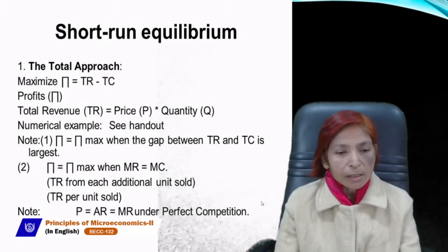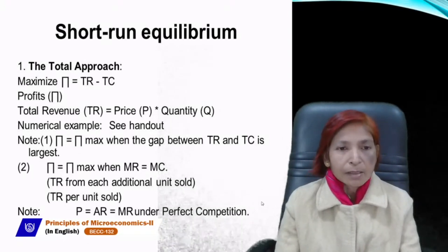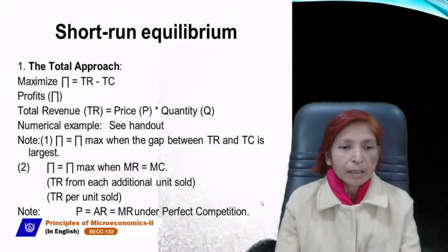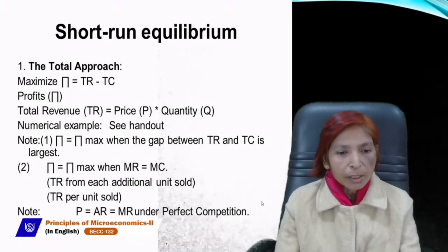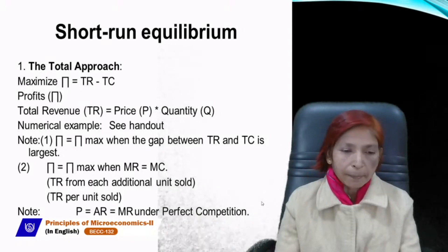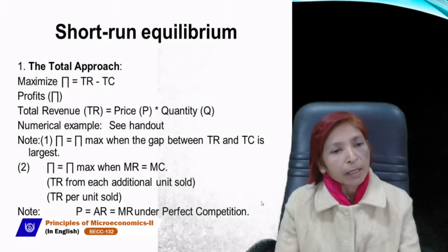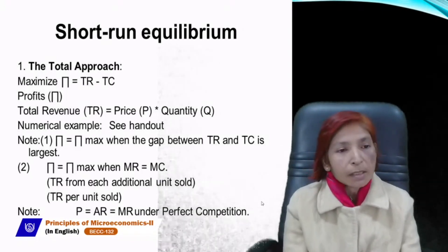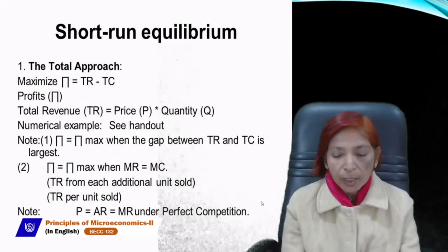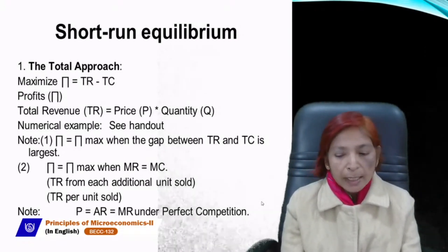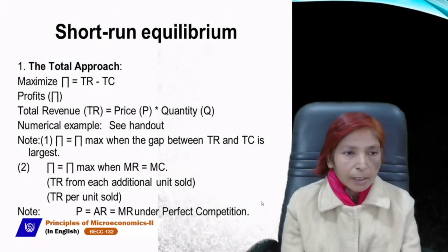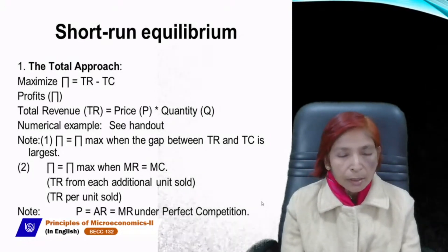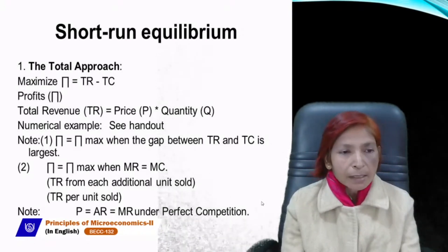These two conditions exist in each and every market — whether perfect competitive, monopoly, or monopolistic competition. The condition remains the same across all markets. Under the TR-TC approach, the difference between TR and TC should be maximum for the firm to earn maximum profit. Under the MR-MC approach, MC should equal MR and MC must cut MR from below.